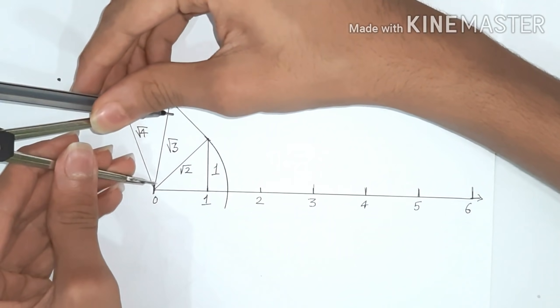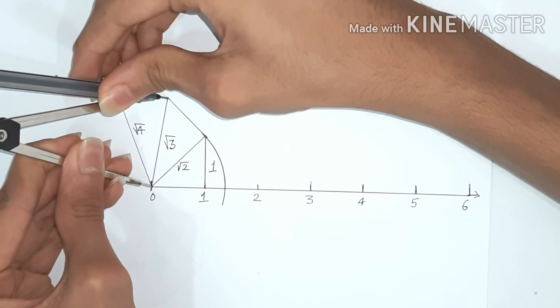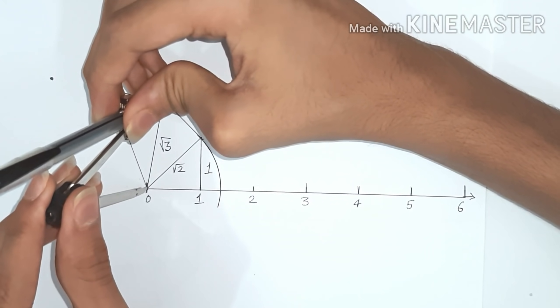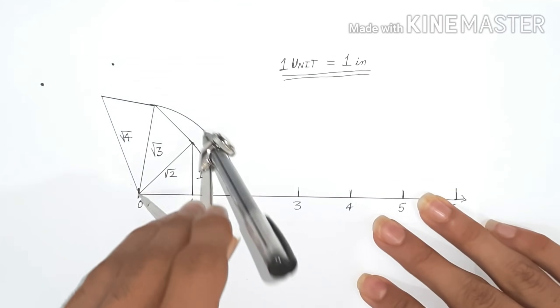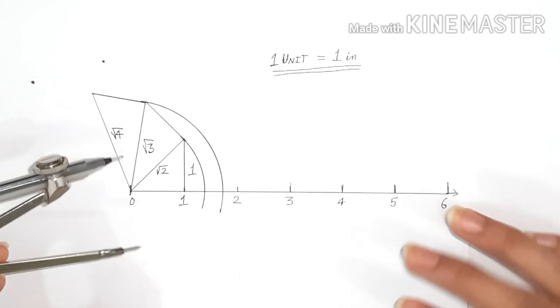So we'll take the radius square root 3 now and we'll mark it on the number line by creating an arc as shown. And after that, we'll do for square root 4.